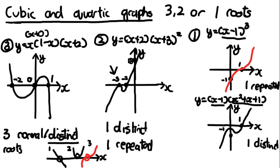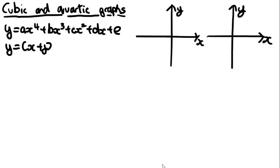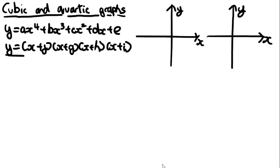Now let's move on to quartics. Quartics are in the form y = ax⁴ + bx³ + cx² + dx + e, and like quadratics and cubics, to sketch them you need them in factorised form: (x + f)(x + g)(x + h)(x + i). All equations in this chapter will be given in factorised form. Sketching quartics is exactly the same as sketching cubics and quadratics in terms of approach - the only difference is the shape of the graphs.